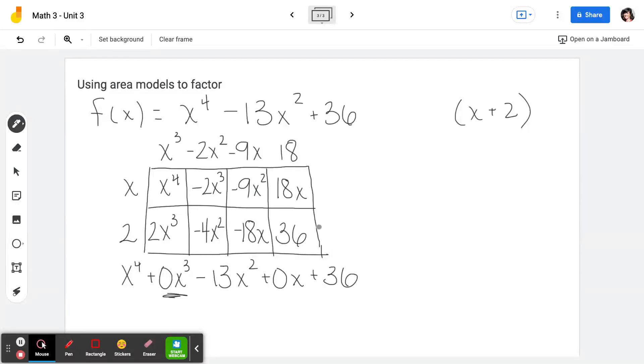And 18 times 2 is 36. So we've started the factoring process for this polynomial. It's fourth degree, so it's going to have a lot of factors. But for now we know that we can factor it into x cubed minus 2x squared minus 9x plus 18 times x plus 2.